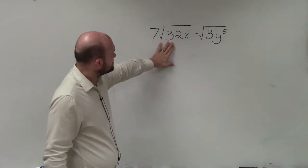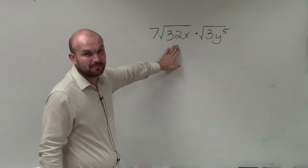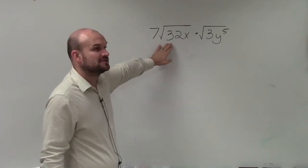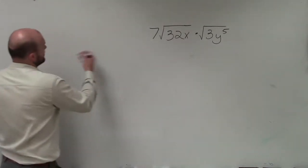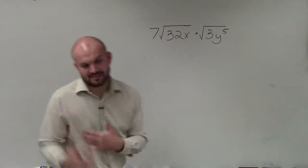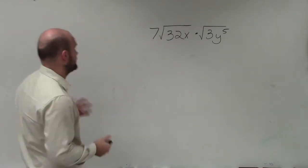So here, 7 times square root of 32, I know that 32 is not a prime number, so I can rewrite this. What I want to do is try to rewrite this as the product of a squared number. And remember your squared numbers, you know, 4, 9, 16, 25, 36, 49, and so on.